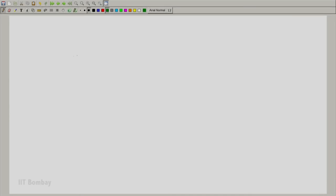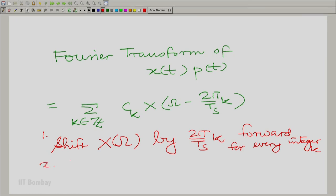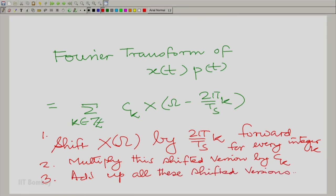Let us do exactly that to obtain the Fourier transform of x(t) times p(t). Therefore, the Fourier transform of x(t) times p(t) is essentially summation k over all the integers, ck capital X(omega minus 2 pi by Ts times k). What are we saying effectively? We are saying shift capital X of omega by 2 pi by Ts times k, first step. Forward for every integer k. Multiply the shifted version by ck. Add up all these shifted versions and there you are. That gives you the Fourier transform of x(t) multiplied by p(t). We have now formally said something which we have been saying by various kinds of illustrations over the last few sessions and in the initial few sessions of this module.